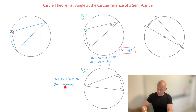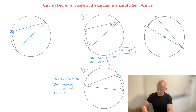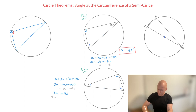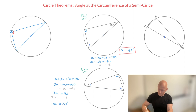Now I get rid of this 90 that's being added to the left-hand side by subtracting 90 from both sides, which leaves us with 3A equals 180 minus 90, which is 90. Finally, I get rid of this 3 that's multiplying A by dividing both sides by 3. So A equals 90 divided by 3, which is 30 degrees. And that's the answer.